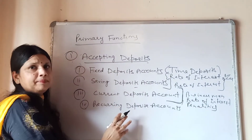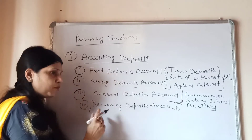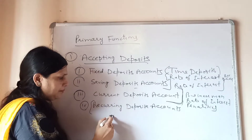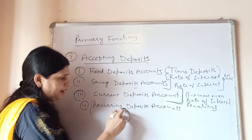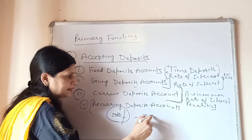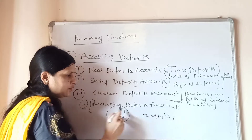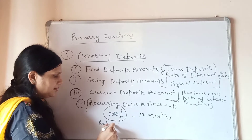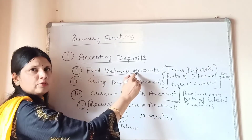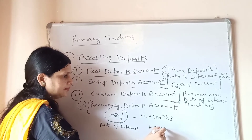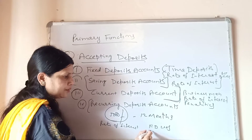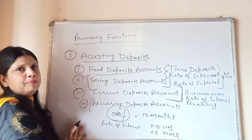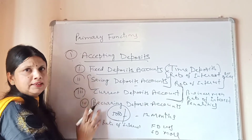The next type is the recurring deposits account. In this account, you have to deposit a specific amount for a specific period. For example, you keep five thousand rupees and you have to pay every month for twelve months. The rate of interest on recurring deposits is lower than fixed deposits but higher than saving deposits.